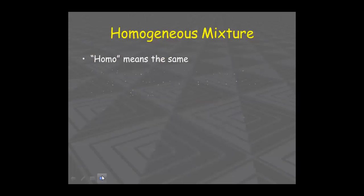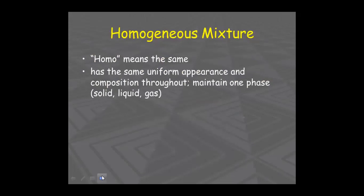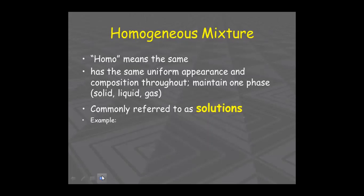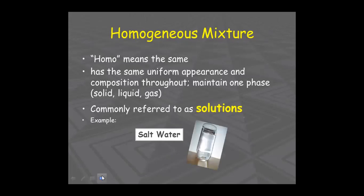Next is homogeneous. 'Homo' means same. So a homogeneous mixture looks uniform — the same throughout. For example, if you mix a spoon of sugar into water, after dissolving, can you see the particles of sugar?